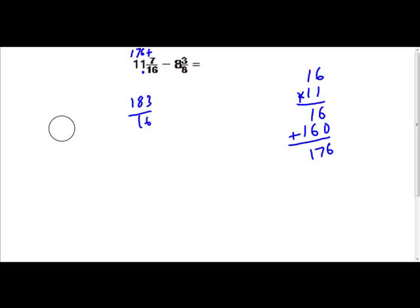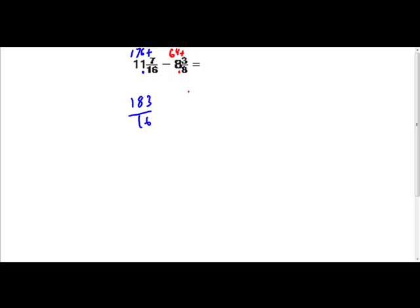That would be one way of changing that to an improper fraction. Let's do the same thing with 8 and 3 eighths. So 8 times 8 is 64. 64 plus 3 is 67 over 8.